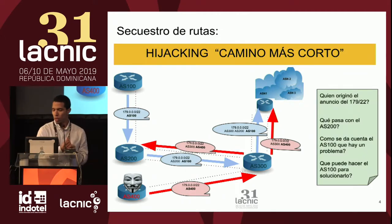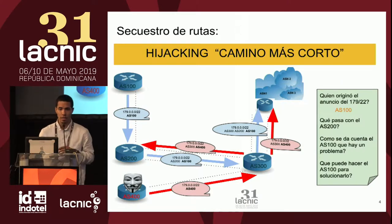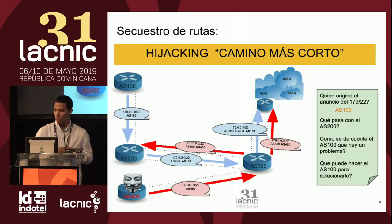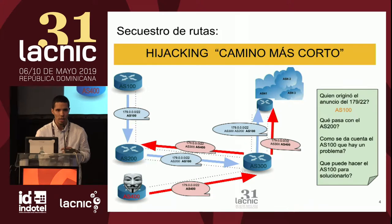¿Quién originó el anuncio del 179/22? Para este caso, el que anunció este prefijo es el AS100, que originó esta ruta. ¿Qué pasa en este caso con el AS200? El AS200 no se ve afectado en este caso por el anuncio del atacante, ya que prevalece el camino más corto, que en este caso es el que le anuncia el AS100. Entonces todo lo que él tenga que enviar a este destino lo hará mediante el AS100.